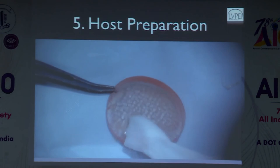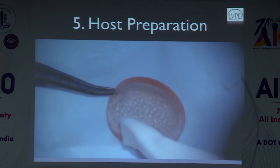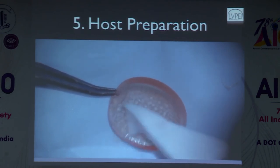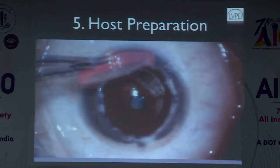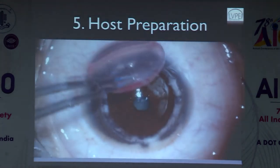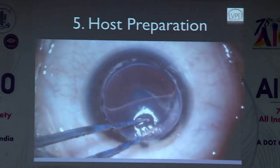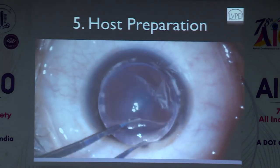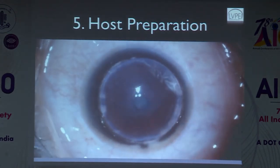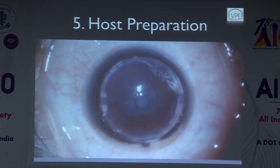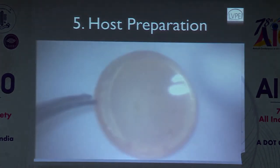You only need to remove the endothelium, not necessarily the Descemet's membrane. If the Descemet's is coming off easily, you can peel it. Otherwise, scrape the endothelium and then place the tissue and sutures without difficulty.